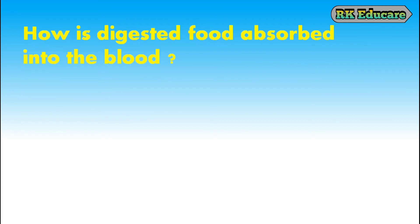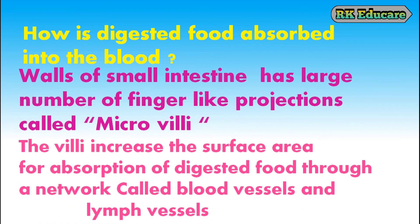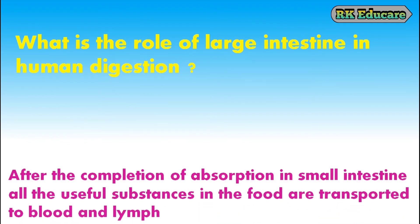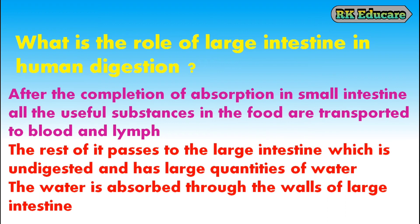How is digested food absorbed into the blood? Walls of the small intestine have a large number of finger-like projections called microvilli. The villi increase the surface area of absorption of digested food through a network of blood vessels and lymph vessels. What is the role of the large intestine in human digestion? After absorption is complete in the small intestine, all useful substances are transported to the blood and lymph. The rest passes to the large intestine, which is undigested and has large quantities of water. The water is absorbed through the walls of the large intestine.